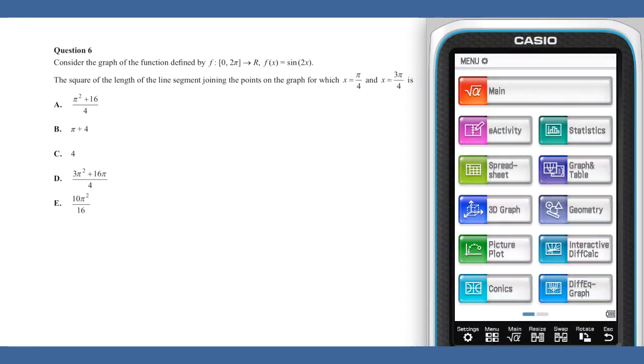Question 6 asks about the length of the distance between the endpoints of a line segment. We can calculate this distance using a user-defined function that applies the distance formula. To do so, we need to know that sine of 2 times pi over 4, which is sine of pi over 2, equals 1, and sine of 2 times 3 pi over 4 is sine of 3 pi over 2, which is minus 1. With these values, we can use our distance formula.